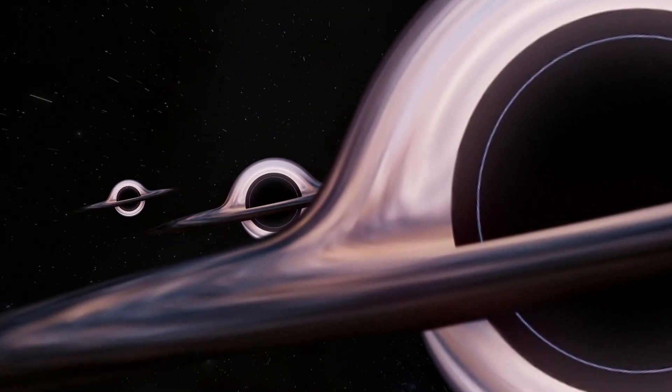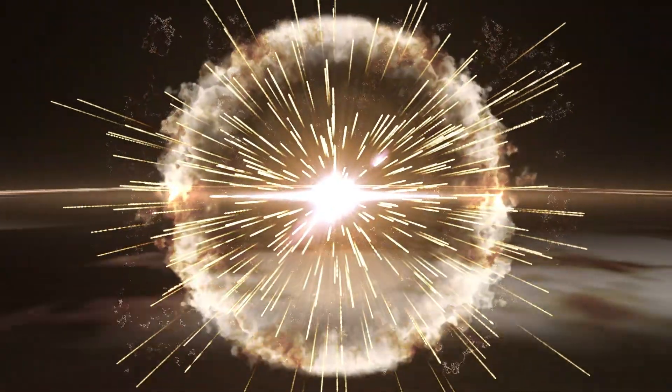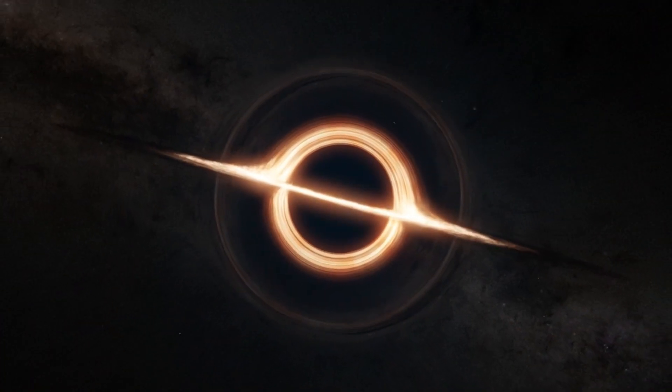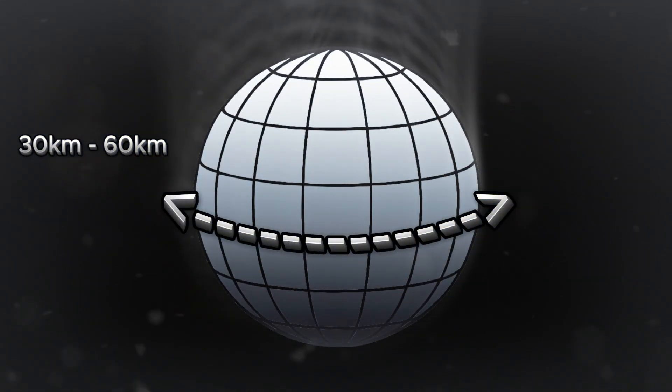Black holes come in a wide range of sizes, but none of them are small in terms of mass. A stellar black hole formed when a massive star collapses is usually between 5 and 20 times the mass of our sun. But that entire mass is squeezed into a sphere only about 30 to 60 kilometers across.